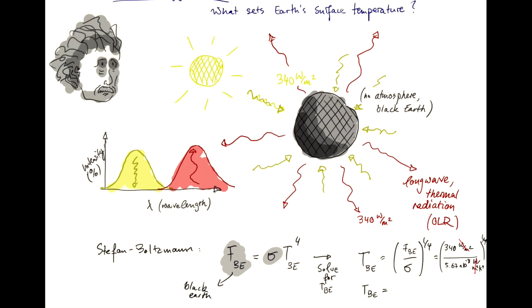And you can plug these numbers in your calculator, and you will find that the surface temperature of this theoretical black Earth would be 278 Kelvin, which is roughly 5 degrees Celsius, which is too cold.